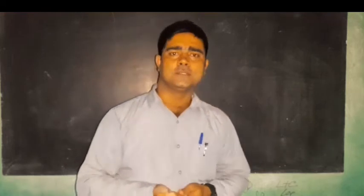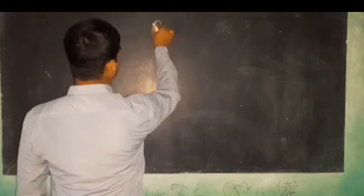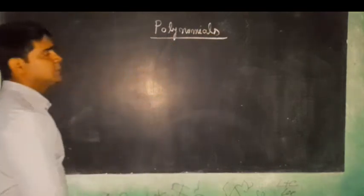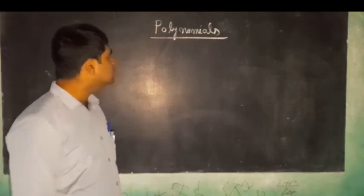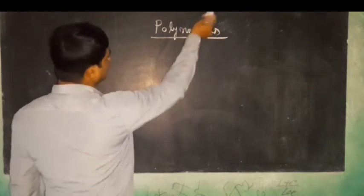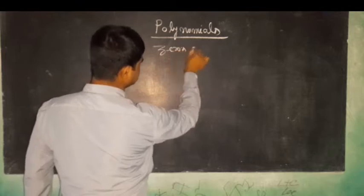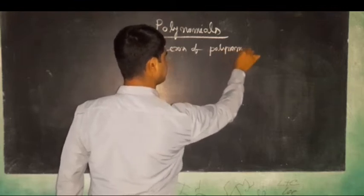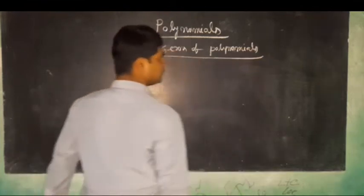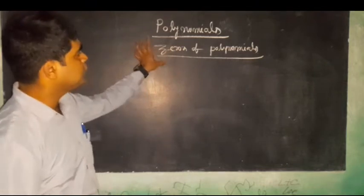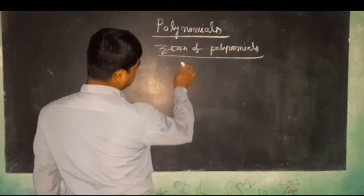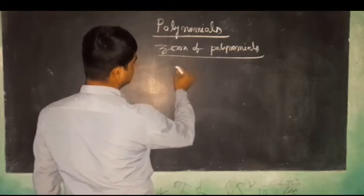Hi friends and dear students, today again we are going to discuss about Polynomials. Today we are going to discuss about the zeros of Polynomials and the relationship between the zeros and the coefficients of a quadratic polynomial. We assume a quadratic polynomial whose standard form is ax squared plus bx plus c.